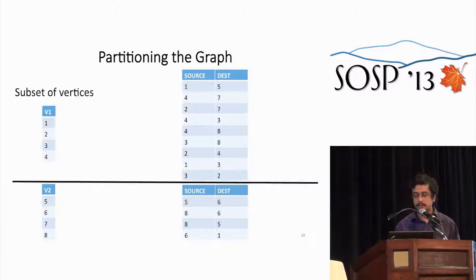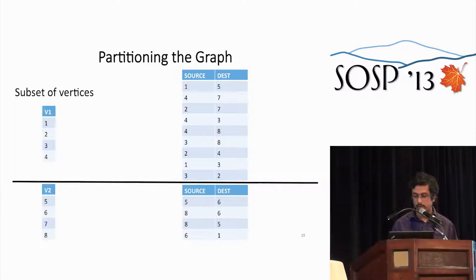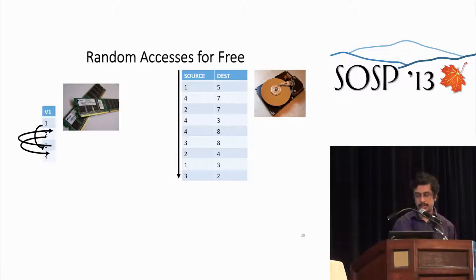Here's how streaming partitions work: we divide the toy graph into two streaming partitions. The first subset is vertices one to four with all edges whose source vertex is one, two, three, or four. We process the graph one streaming partition at a time — load the vertex set for the partition into main memory, then scan the edge list from disk. Because we've chosen the vertex set to fit in main memory, our random accesses are free, since we no longer need to go to disk to get the vertices.